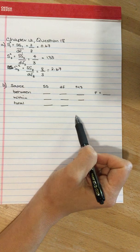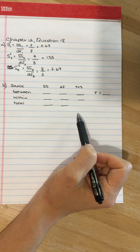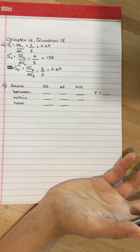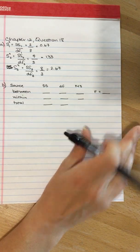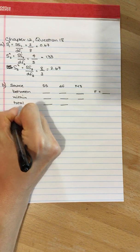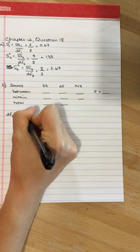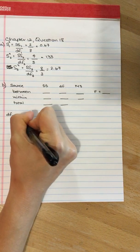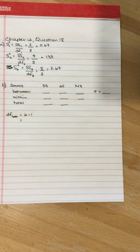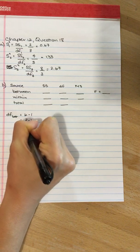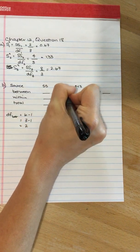I often find it easiest to start with the degrees of freedom. Degrees of freedom between is equal to K minus one, where K is the number of groups. We've got three treatments here, so the degrees of freedom between is two.